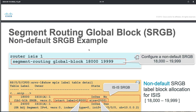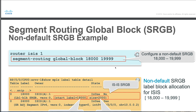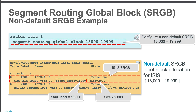To configure a non-default sRGB, you go under your IGP instance. In this example, the label starts from 18,000 all the way to 19,999. Again, you can configure a non-default sRGB but it's not recommended — it's recommended to have the same sRGB block on all nodes. To verify, use 'show MPLS label table detail', which in this case shows labels starting from 18,000 with a size of 2,000.